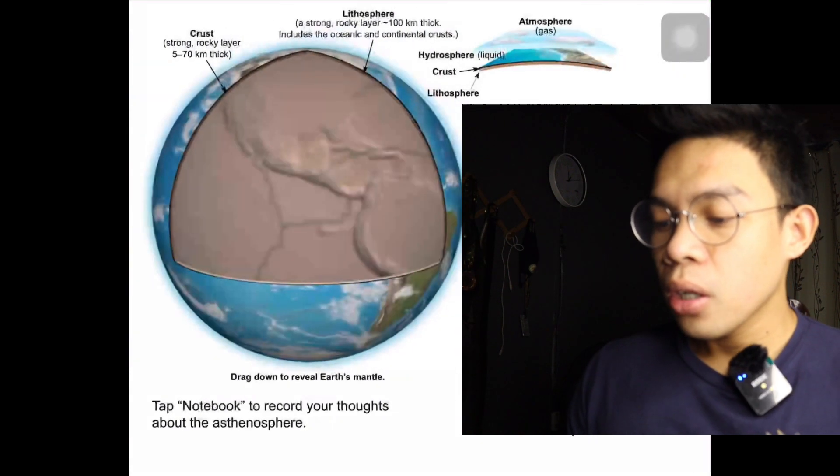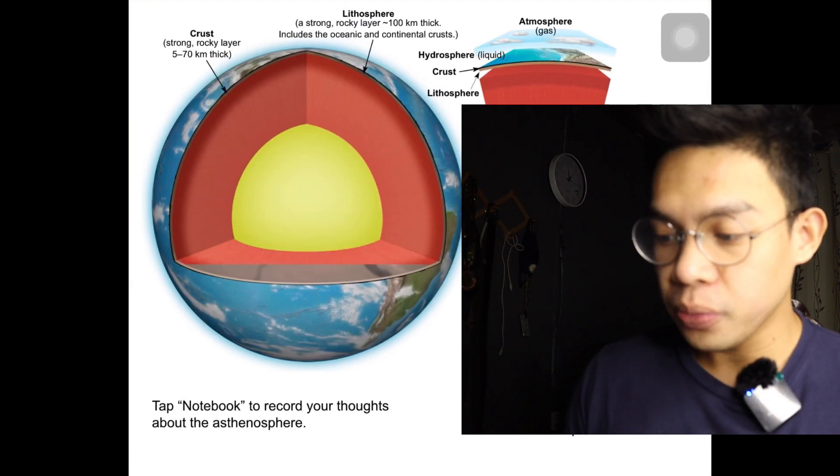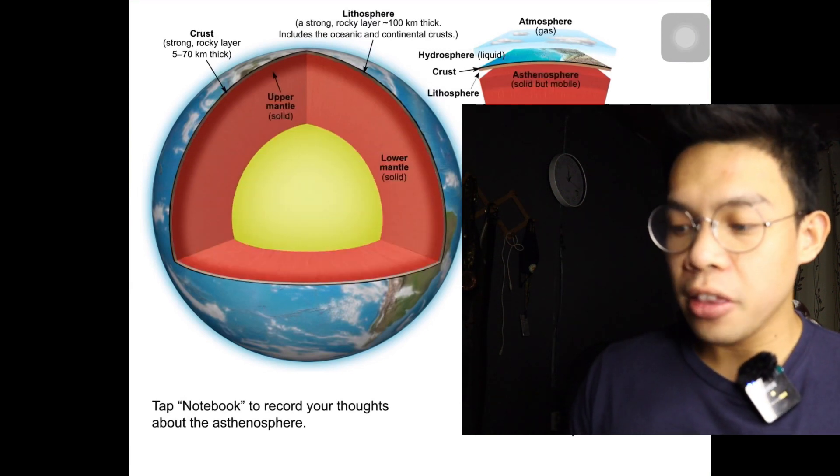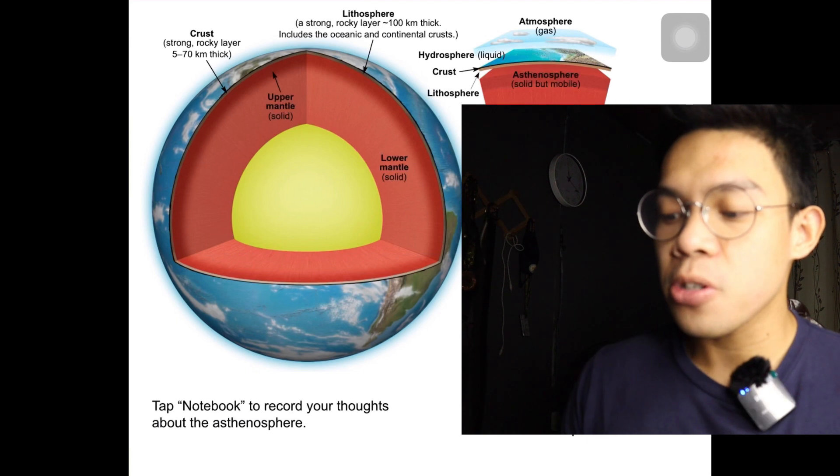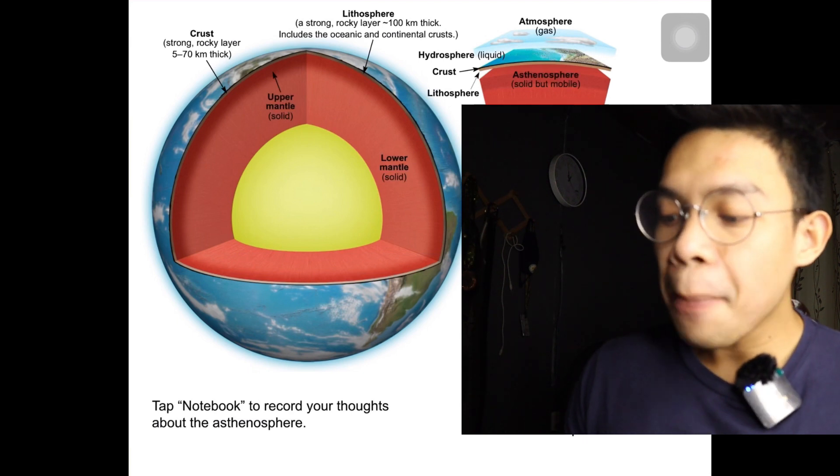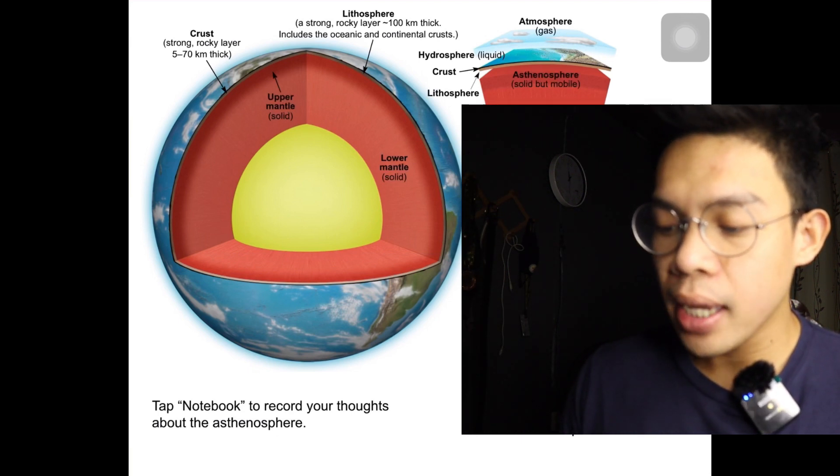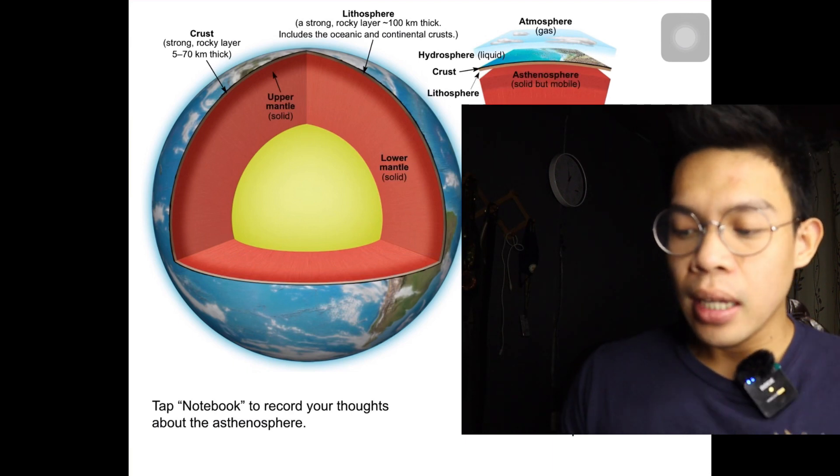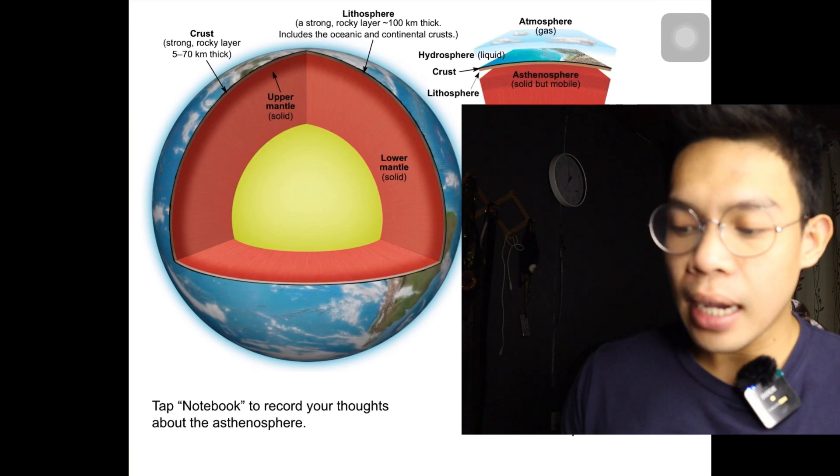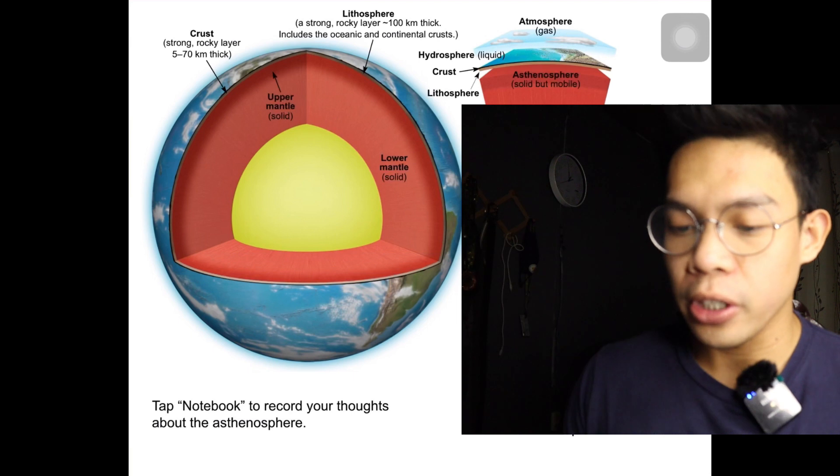The mantle contains over 82% of the Earth's volume. Heat from the Earth's interior is the major source of energy for the movement of the lithosphere. The upper mantle includes the lithosphere below the crust and the asthenosphere, a weak, mobile layer of rock that is subject to melting. The lower mantle is made up of very hot but strong rocks that extend to the top of the core.